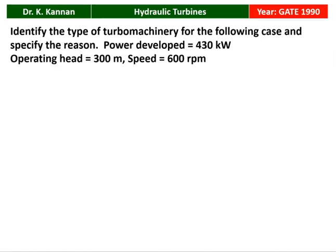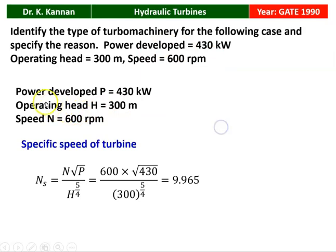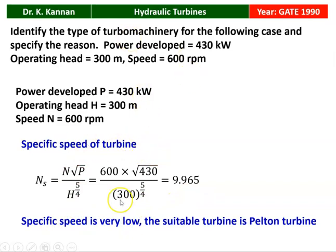The next question is from the 1990 question paper. Identify the type of turbomachinery for: power developed = 430 kW, operating head = 300 m, speed = 600 rpm. The specific speed Ns = N√P / H^(5/4) = 600 × √430 / 300^(5/4) = 9.965. This is a low specific speed turbine. For low specific speed, the suitable turbine is the Pelton turbine, which is the correct answer for this given data.